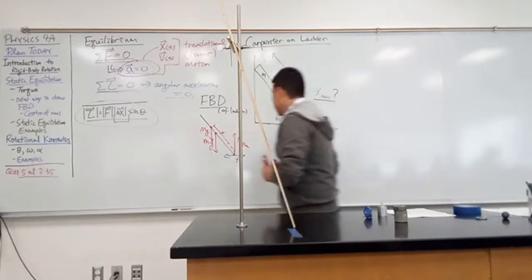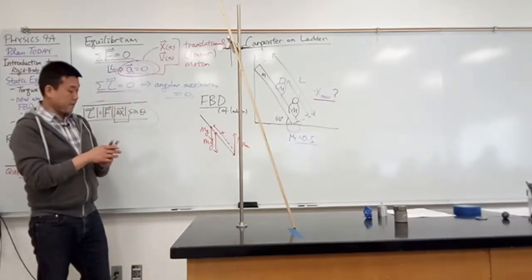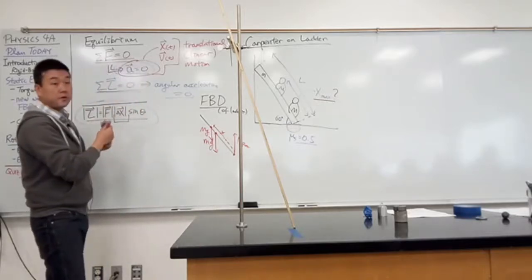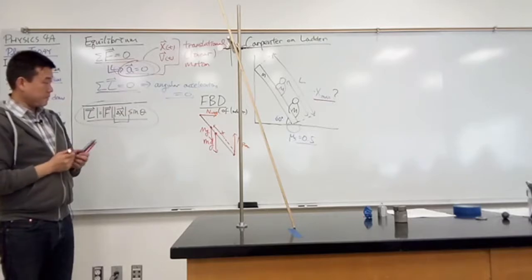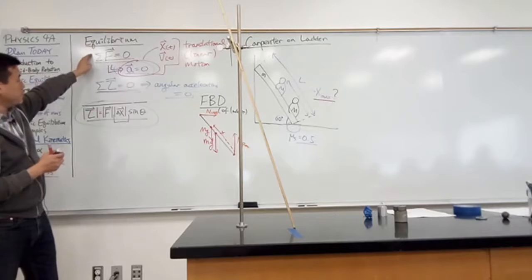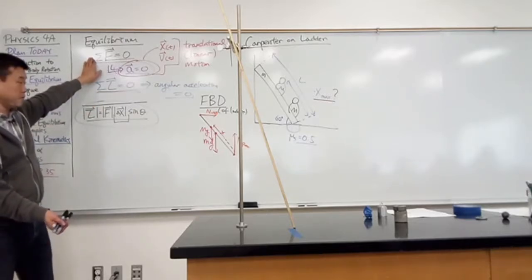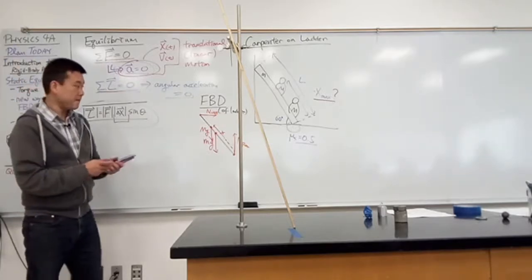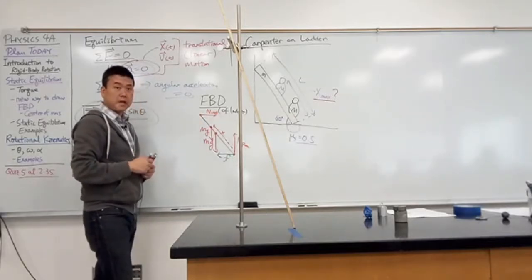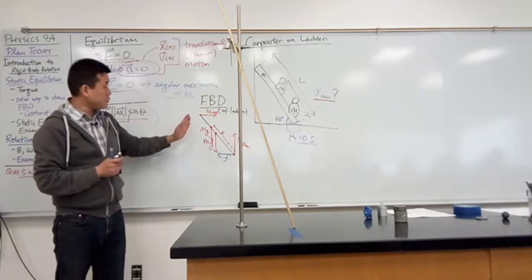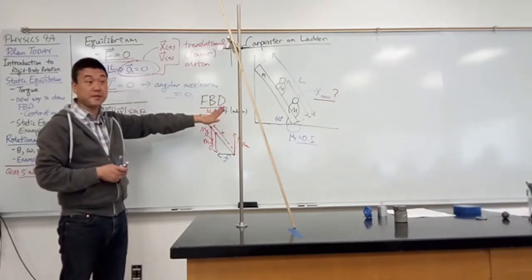Now, looking at this free body diagram, the net torque condition should be satisfied. But net force in the horizontal direction is not zero — the normal force from the wall is unbalanced. So this is the point at which I introduce friction at the base contact point, pushing left to balance that force. I'm treating the wall as frictionless to simplify the problem. For the ground, frictionless is impossible — as you saw, the ladder would just slide.